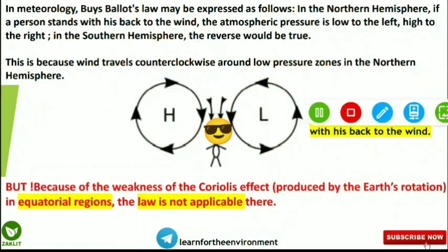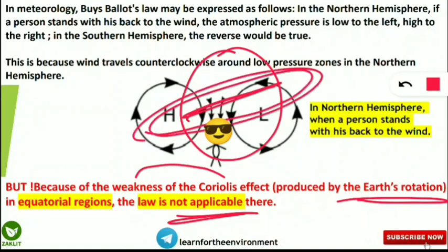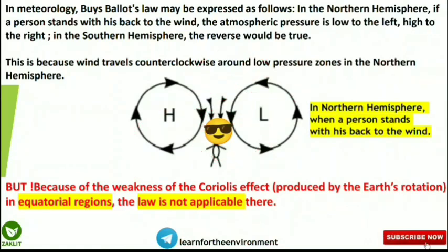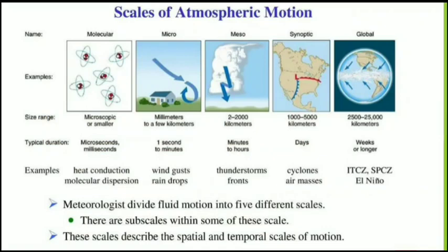One more important point: at the equatorial region, Buys Ballot's Law is not applicable because there is a weak Coriolis effect. The Coriolis effect, produced by Earth's rotation, is weak near the equator. In the Northern Hemisphere, wind travels counterclockwise around the low-pressure zone, while in the Southern Hemisphere it travels clockwise around the low-pressure zone.